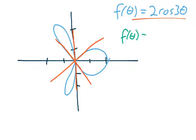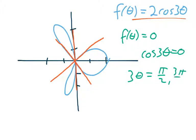So cos 3 theta equals 0. And we know that means 3 theta—cosine is 0 at pi over 2, and 3 pi over 2—so 3 theta is pi over 2, 3 pi over 2, and so on, 5 pi over 2.